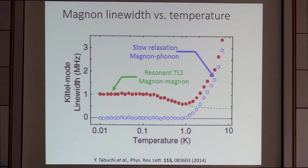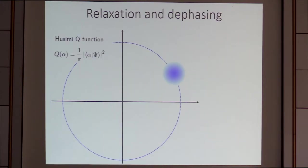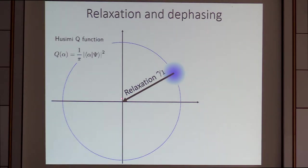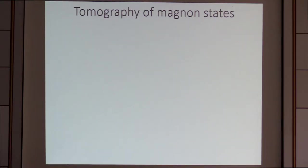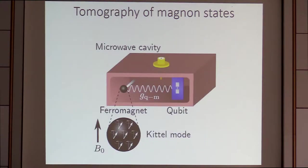To gain further insight, it's better to reconstruct the quantum state of the magnon. One example is the Q function. The relaxation proceeds in phase space: the magnon state may relax to the vacuum, but there may also be dephasing. We don't know, and the total linewidth may come from relaxation plus dephasing. To understand this, it's better to resort to tomography of the magnon state. We use the coupled magnon-qubit system, where the qubit and cavity act as a measurement device.